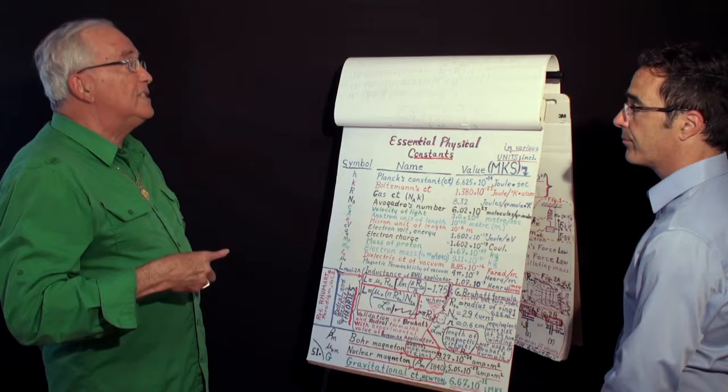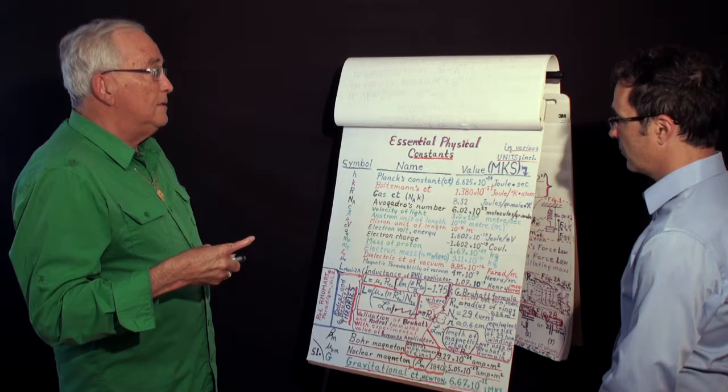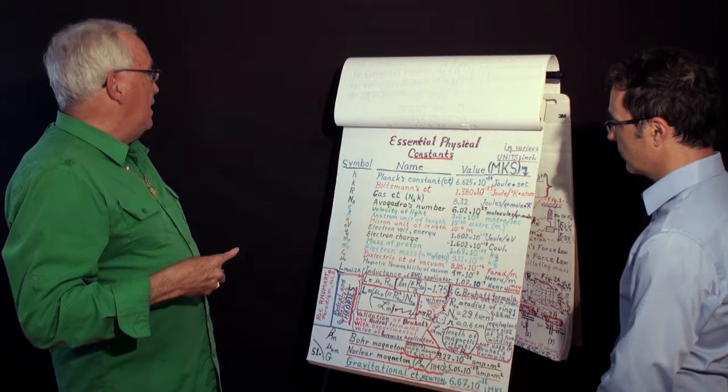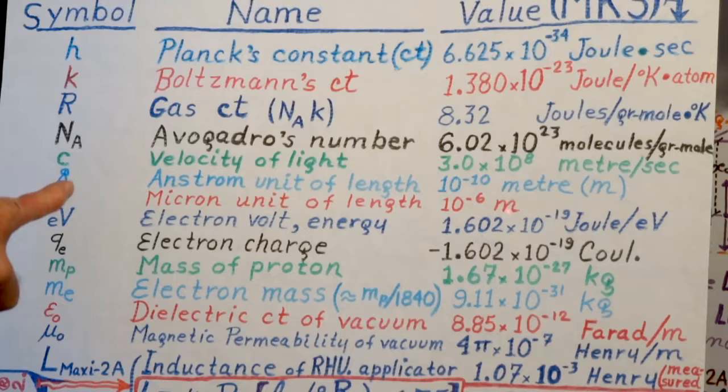But this is a very small unit. Mu is used for micron unit of length. It's about the size of one cell, of many cells that are spherical. Ev, it's in joules per electron volt.